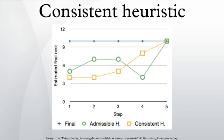In the unusual event that an admissible heuristic is not consistent, a node will need repeated expansion every time a new best cost is achieved for it.